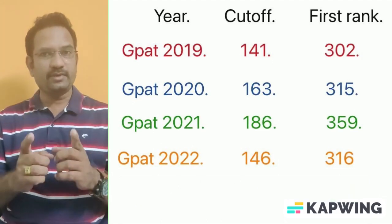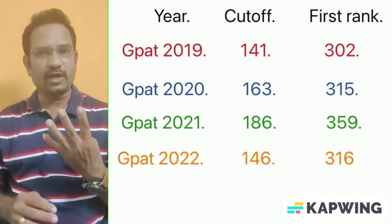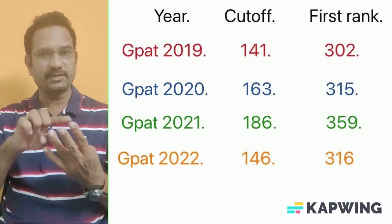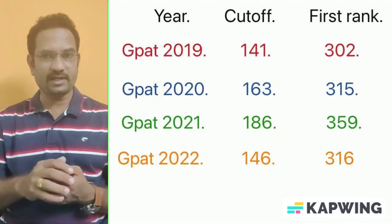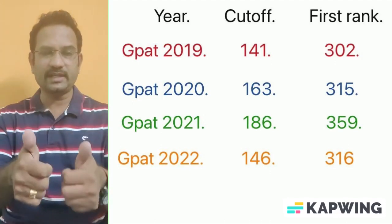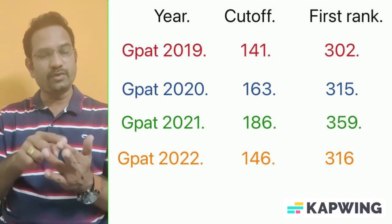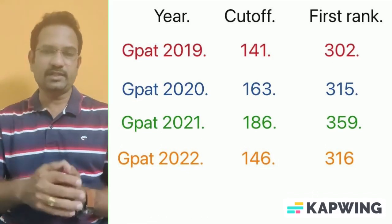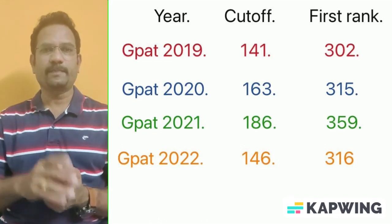Be careful with negative marks. You have four options — imagine you have confusion between two options, so there is a 50% probability of getting it right. In such cases, you can take a guess and move ahead. But if you have confusion among three or four options, never touch that question. Negatives are very problematic.